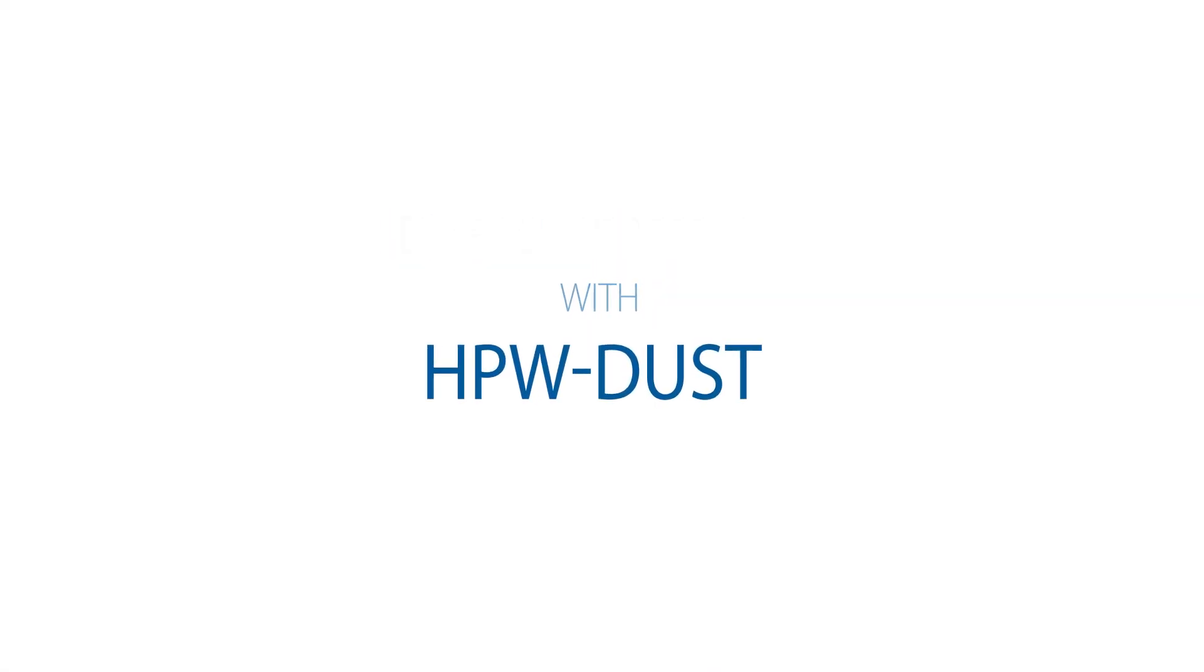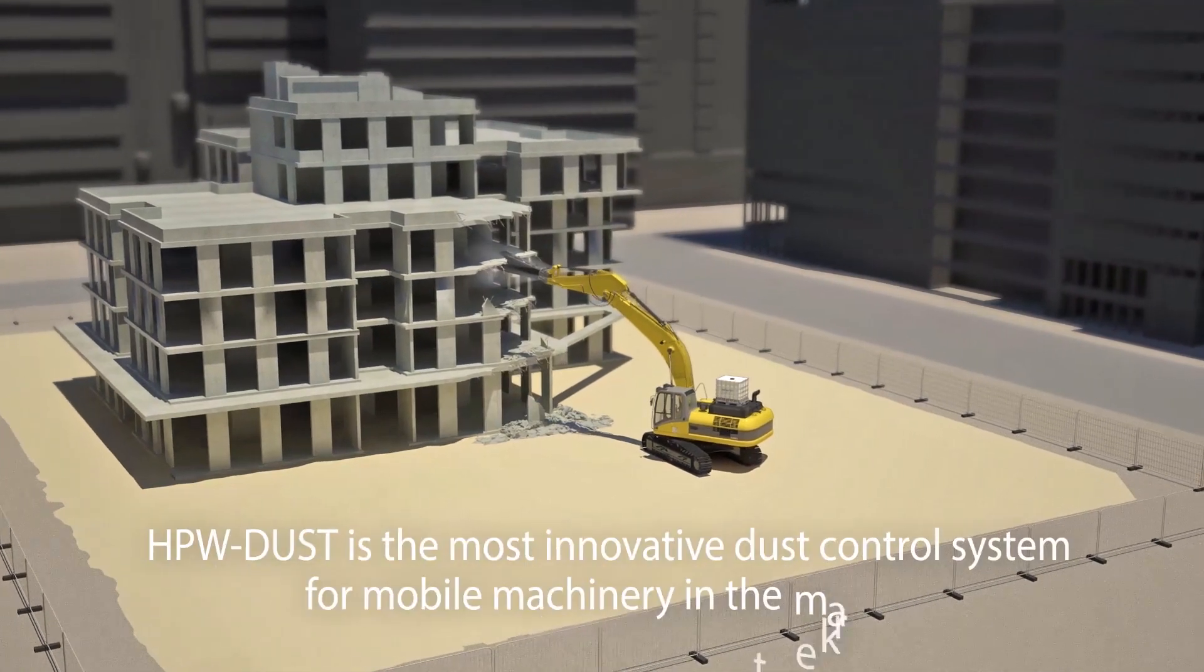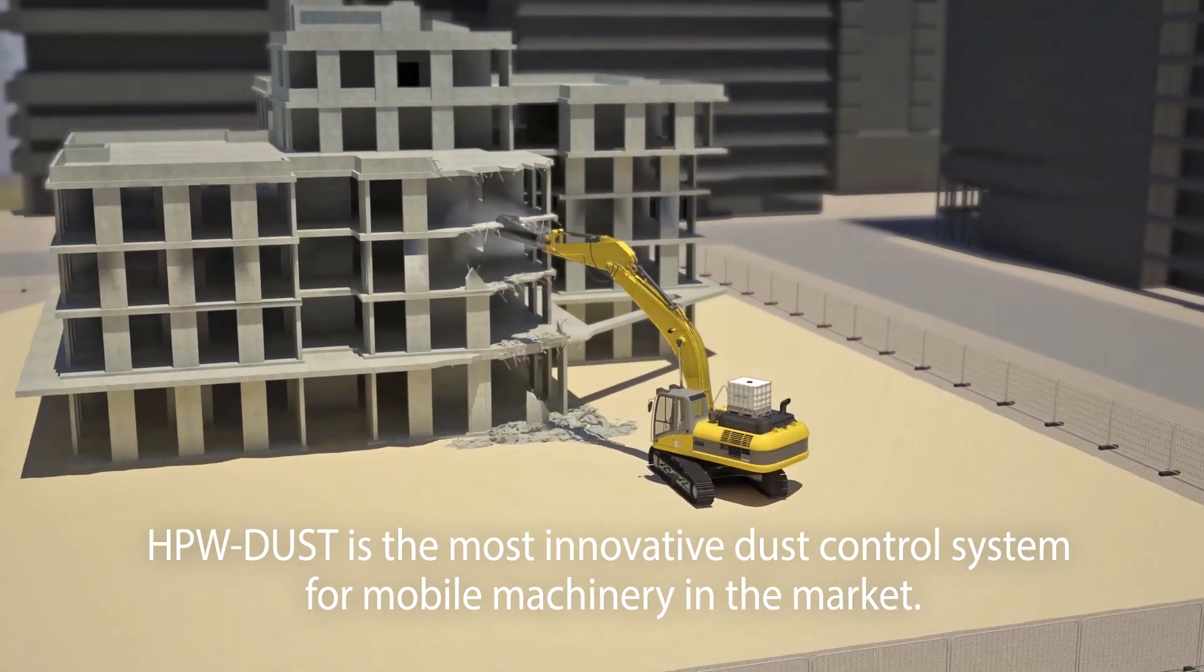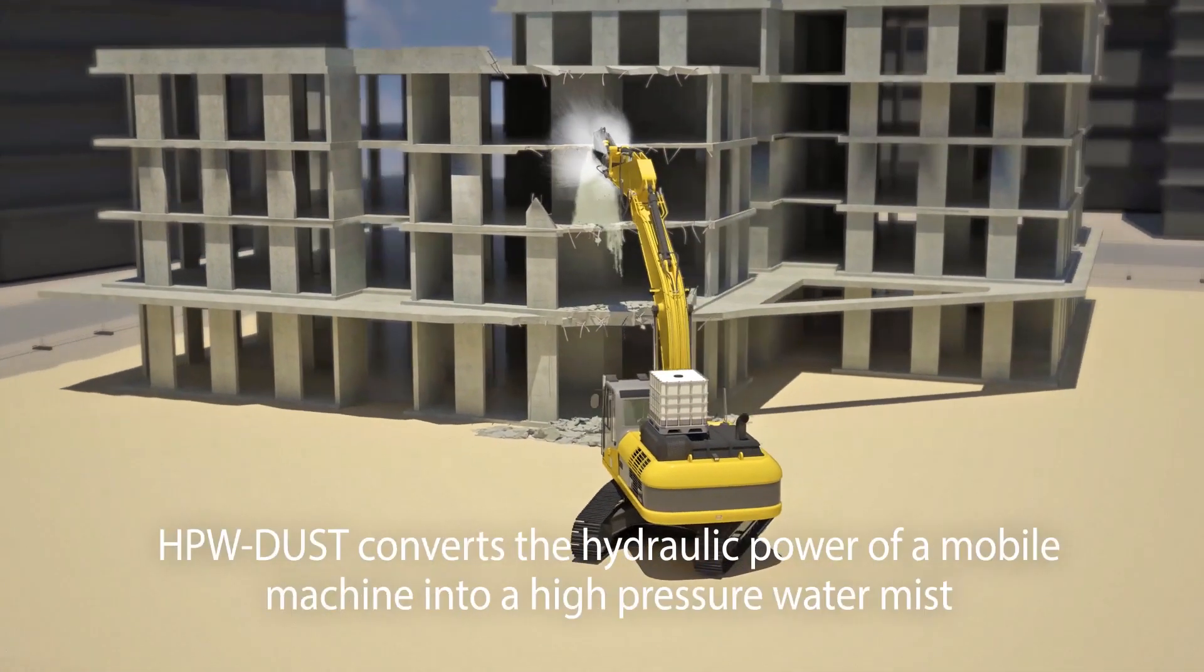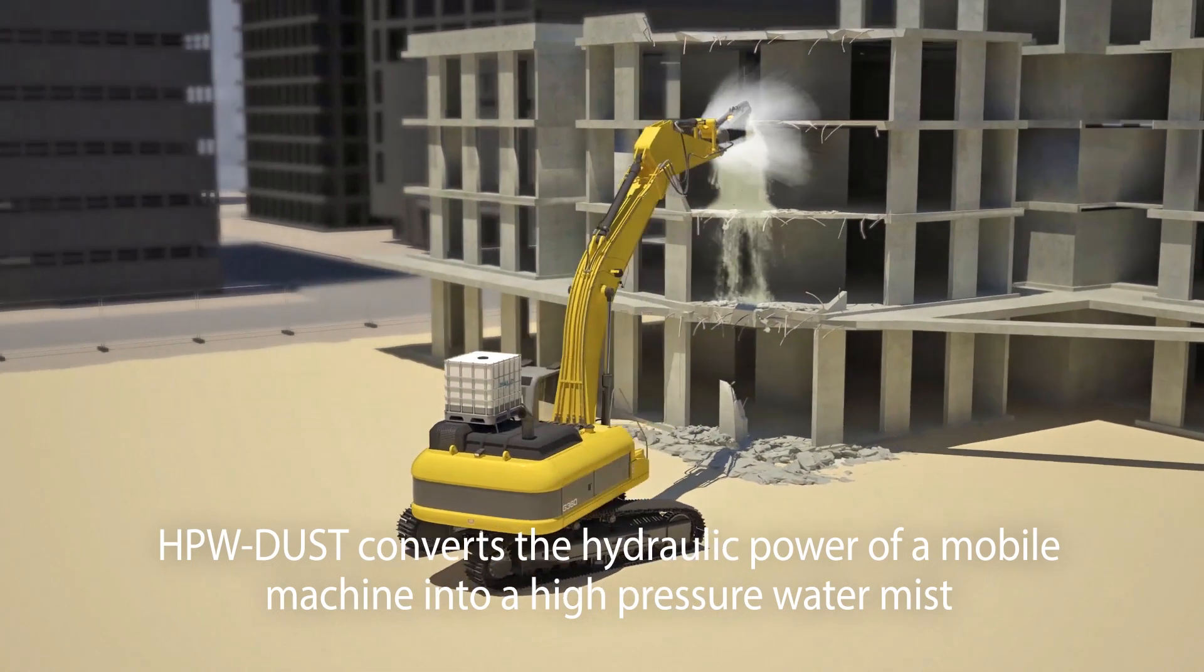Dynaset HBWDust high-pressure dust suppression system is the most innovative dust control system for mobile machinery in the market. It converts the hydraulic power of a mobile machine into a high-pressure water mist.